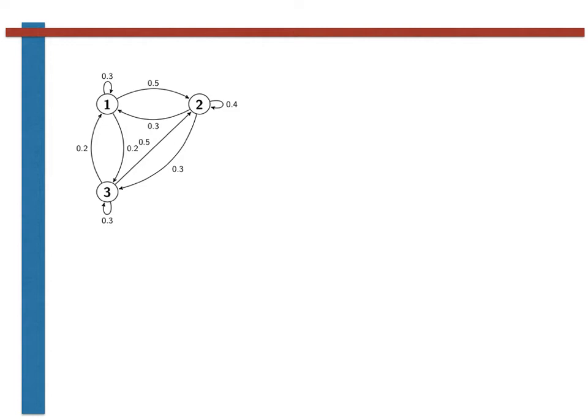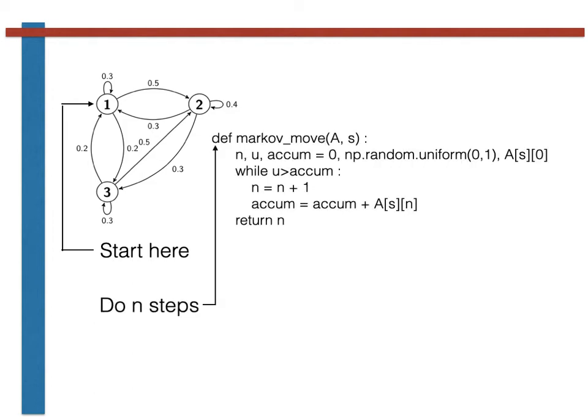What we now want to do is the following. We want to suppose that we start simulating a Markov chain from this state. We then want to perform n steps using the Markov move function that was introduced last week, and that has been described in detail in previous videos. The question we would like to answer is, after this series of n steps, what is the probability that this series of n moves finishes here in state 2?